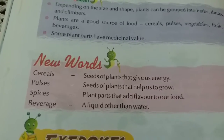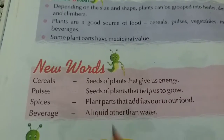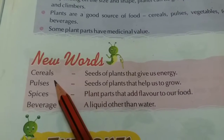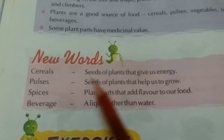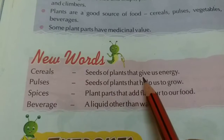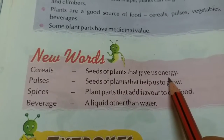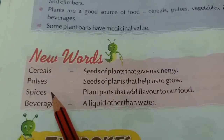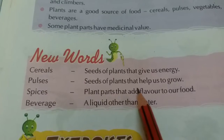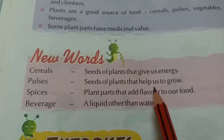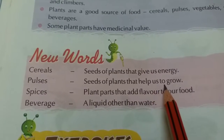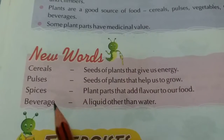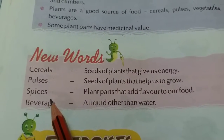Starting with the new words. The first one is cereals — seeds of plants that give us energy. The second one is pulses — seeds of plants that help us to grow.